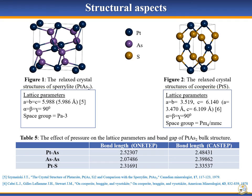These are the structural aspects of sperrylite and cooperite respectively. On the far left, we have the sperrylite crystal structure that crystallizes in a cubic system. On the far right, we have the cooperite crystal structure that crystallizes in a tetragonal system.